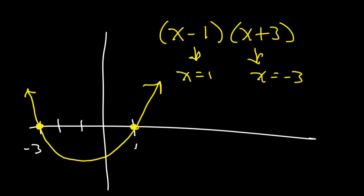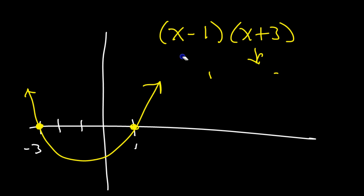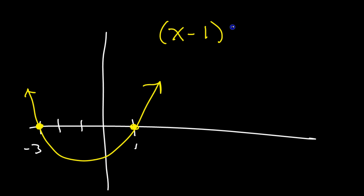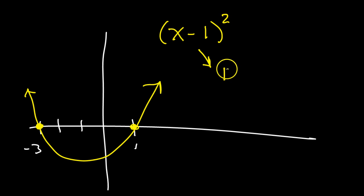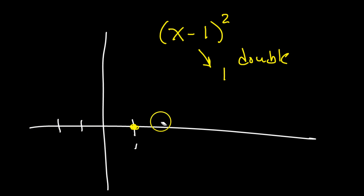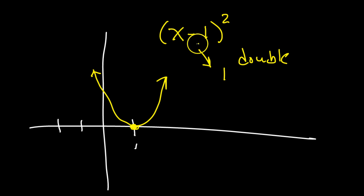These are single roots — there's just one of each. But imagine instead of x minus 1, you had x minus 1 squared. That's multiplicity 2, a double root. The behavior of a graph at a double root is different: if there's a double root, you're going to get a bounce. It hits the root, then goes back the way it came.